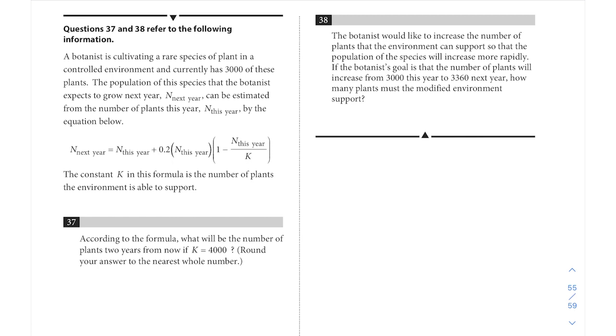Questions 37 and 38 relate to the following information. It says a botanist is cultivating a rare species of plant in a controlled environment and currently has 3,000 of these plants. The population of this species that the botanist expects to grow next year can be estimated from the number of plants this year by the equation below. The constant K in this formula is the number of plants the environment is able to support.